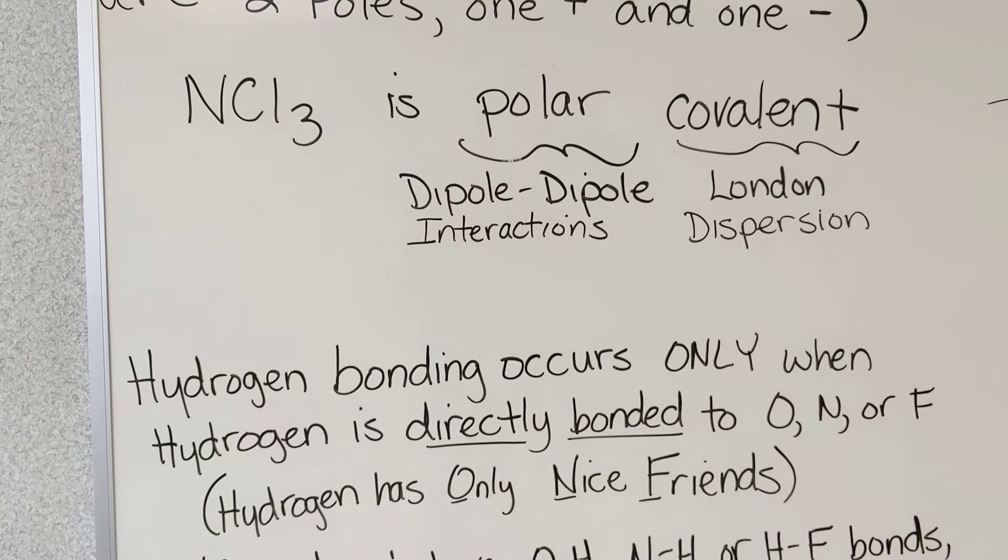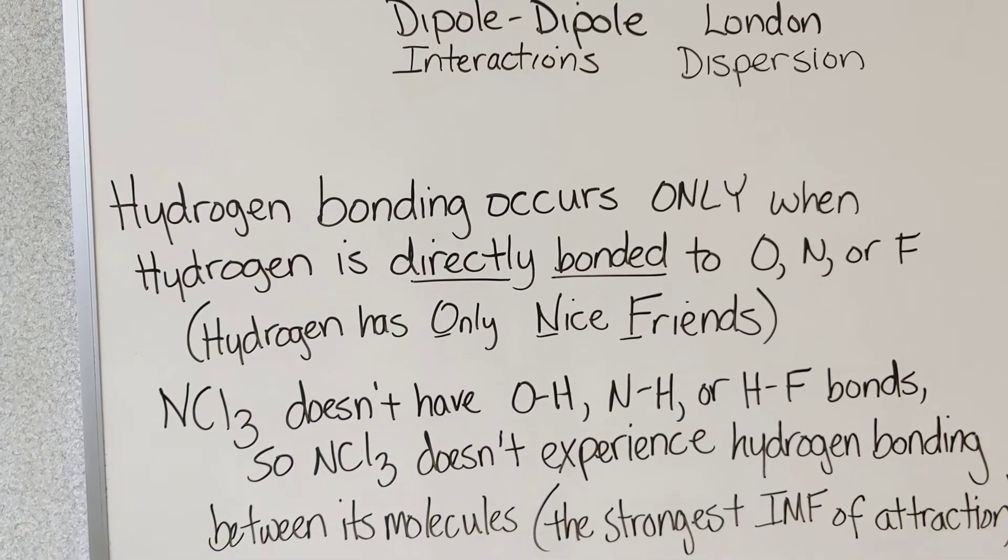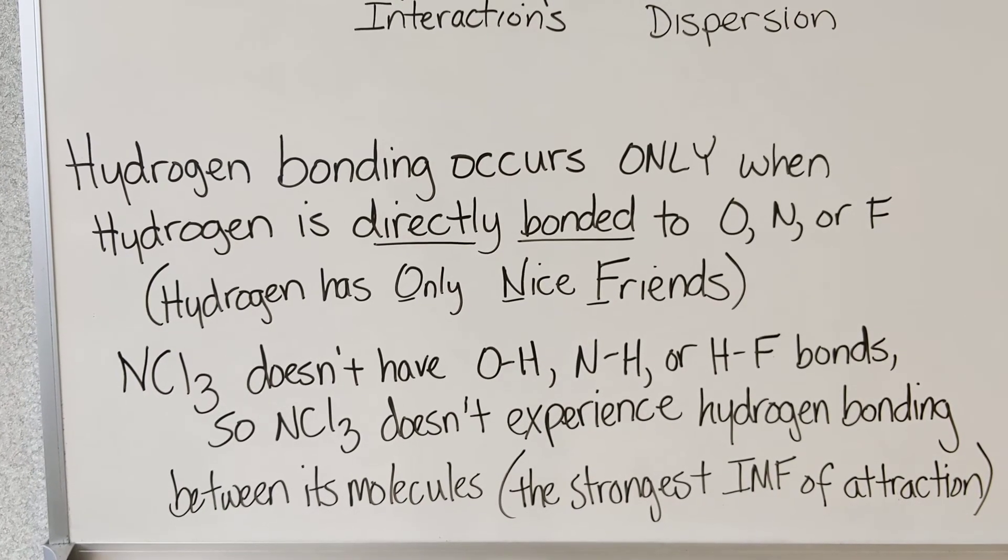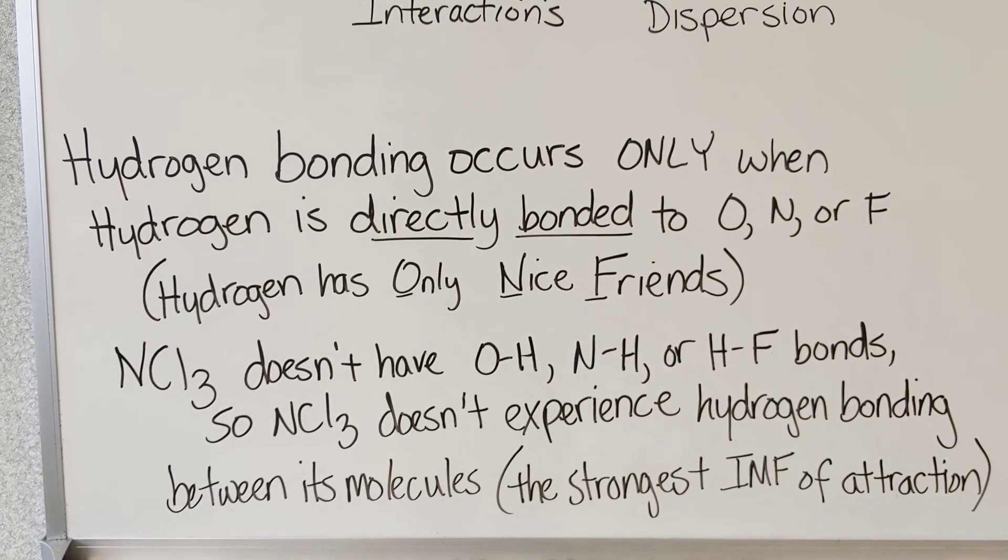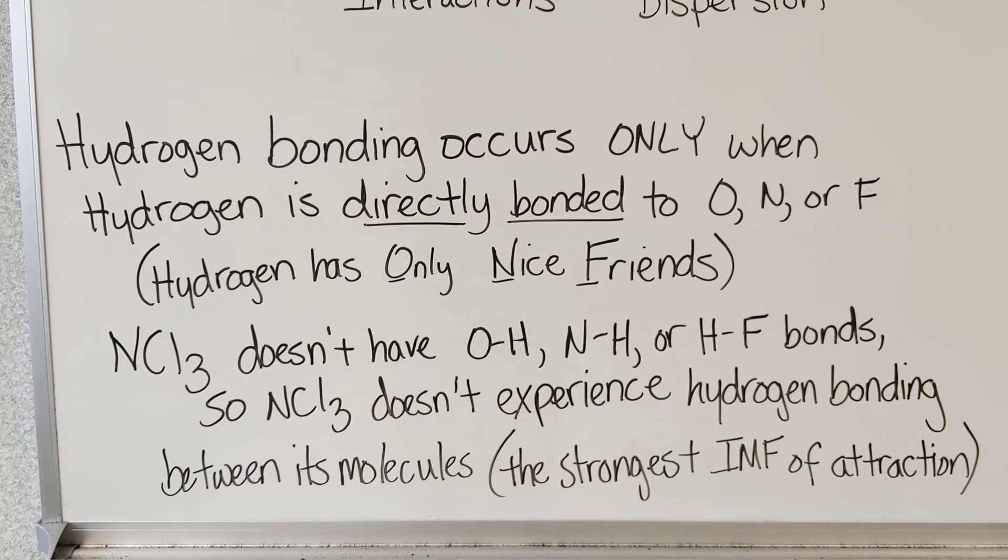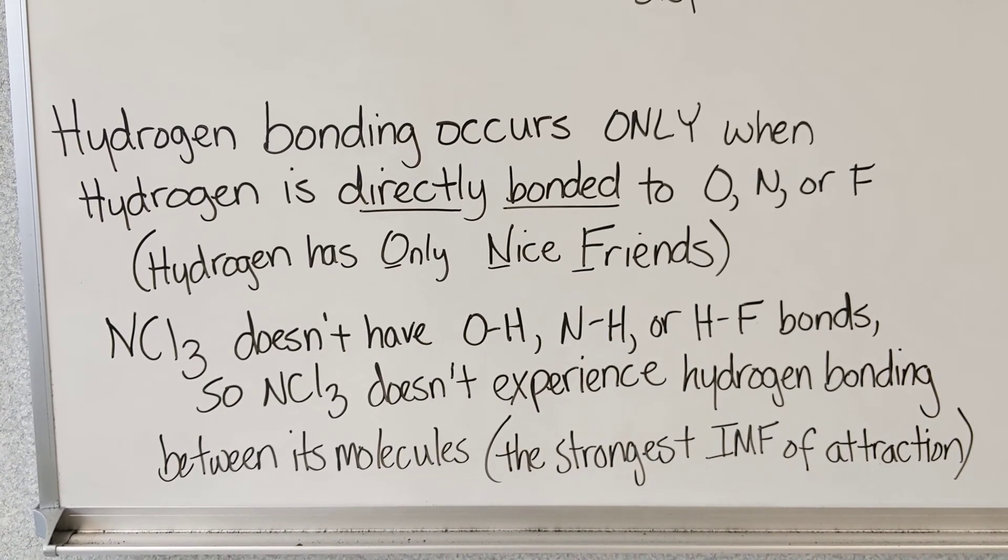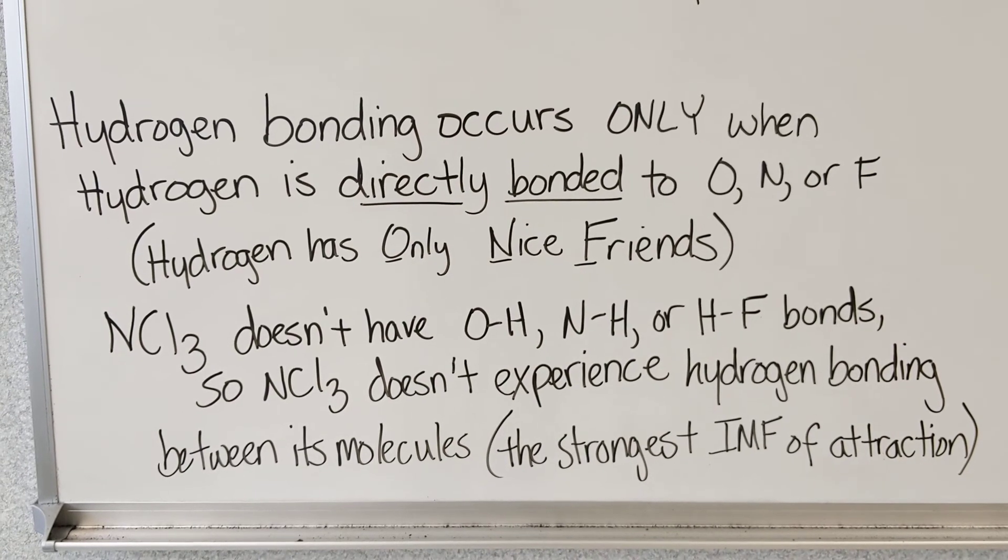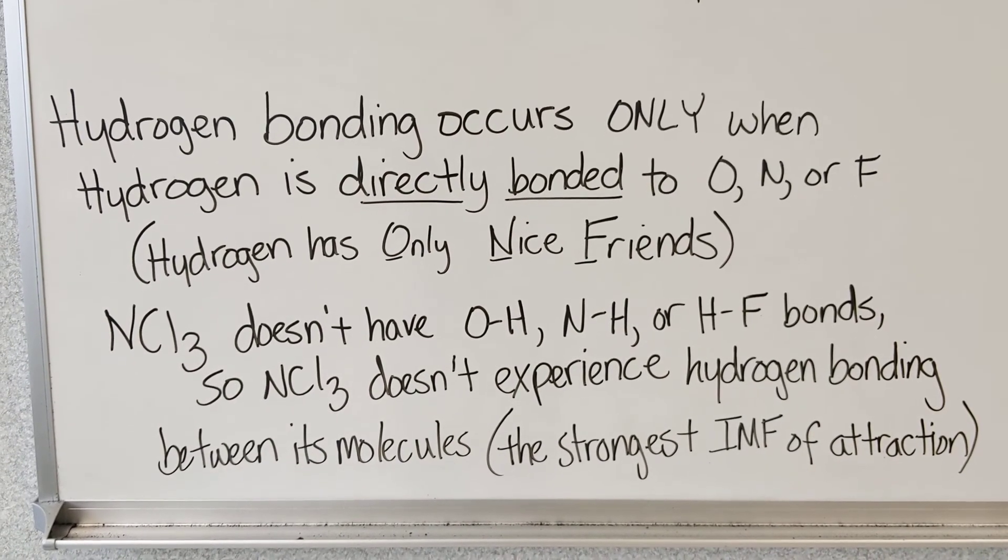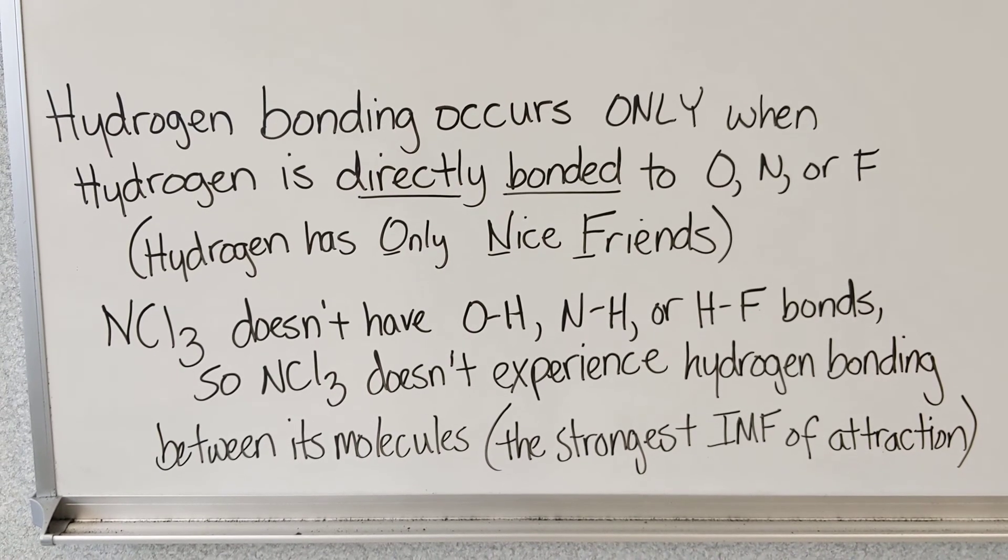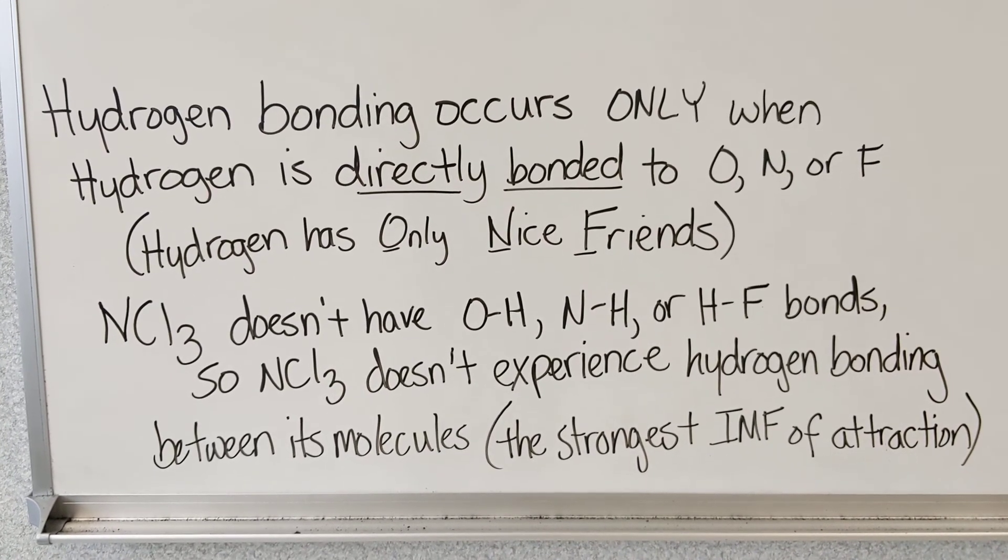A final note, hydrogen bonding occurs only when hydrogen is directly bonded to oxygen, nitrogen, or fluorine. Hydrogen has only nice friends. NCl3 doesn't have an OH bond, an NH bond. It's also not HF. So NCl3 doesn't experience hydrogen bonding between its molecules. The hydrogen bonding would be the strongest intermolecular force of attraction.